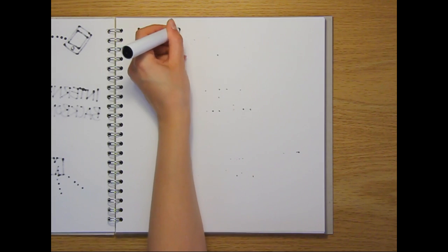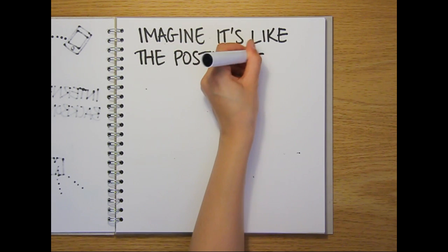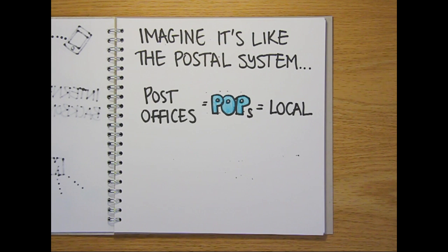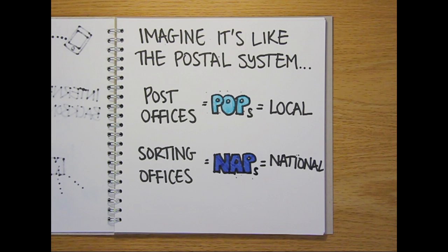These different entities can be compared to post offices and sorting offices in the postal system. The post offices, POPs, are where local network traffic is collected, while the sorting offices, NAPs, are where the national network traffic is sorted.